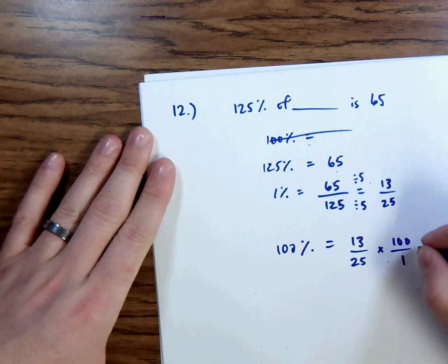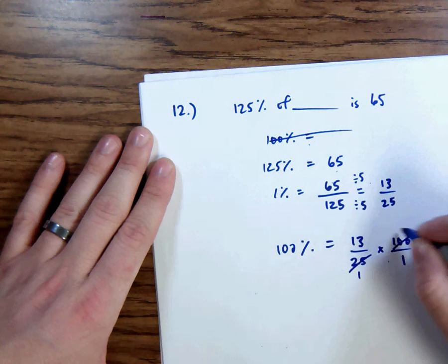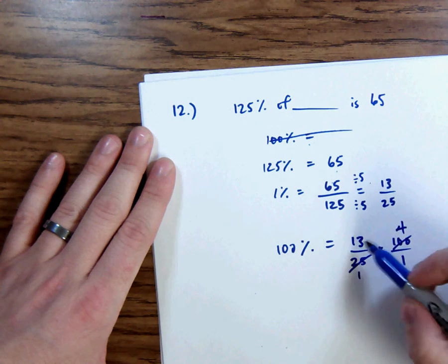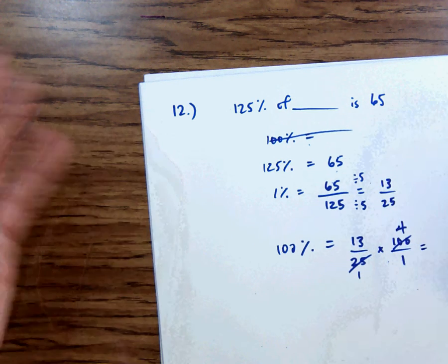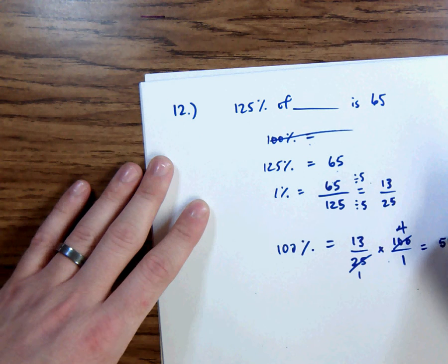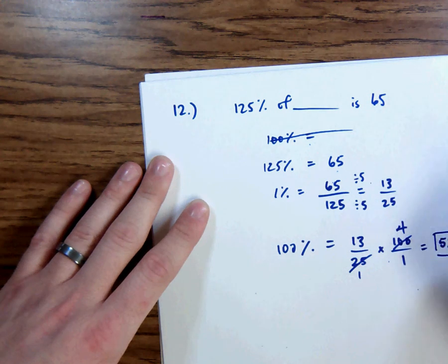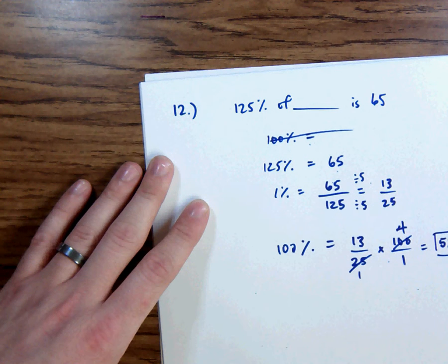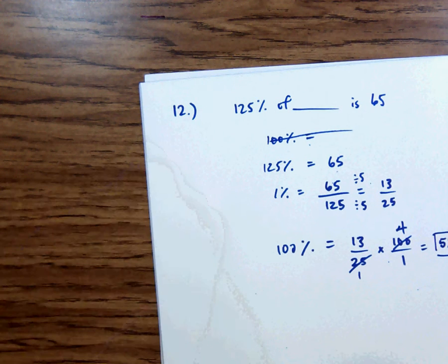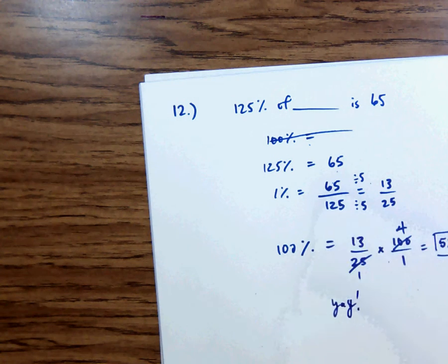So I noticed that 25 goes to 100 four times. So my final answer would be 13 times 4. 13 times 2 is 26. 26 times 2 is 52. The answer is 52. So 125% of 52 is equal to 65. And that is the last problem for this video. So yeet.